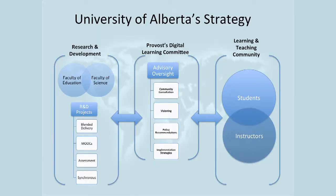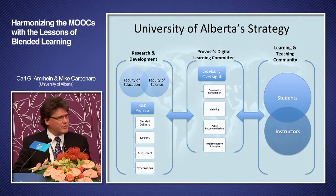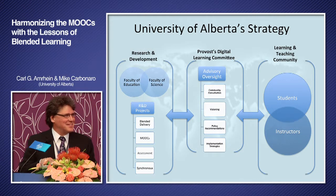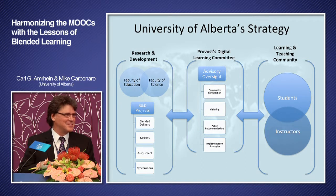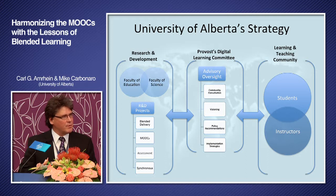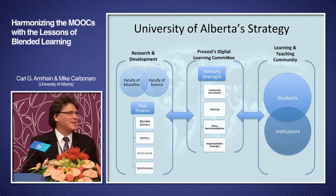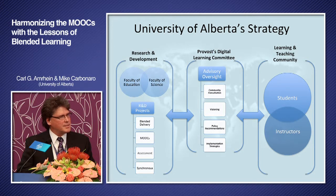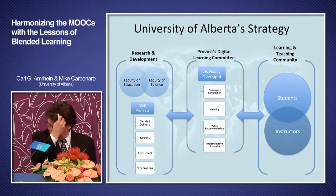We had to come up with a strategy for our university. Being a large-scale public institution, as many of you know, it's quite difficult to transform. We came up with three key elements. First is the research and development component — we formed a small R&D group, limiting everything to the Faculty of Education and the Faculty of Science. They're not small: we have about 3,500 undergrads in Education with about 800 grad students, and about 6,000 in Science. We had a joint venture combining both groups on this R&D project.